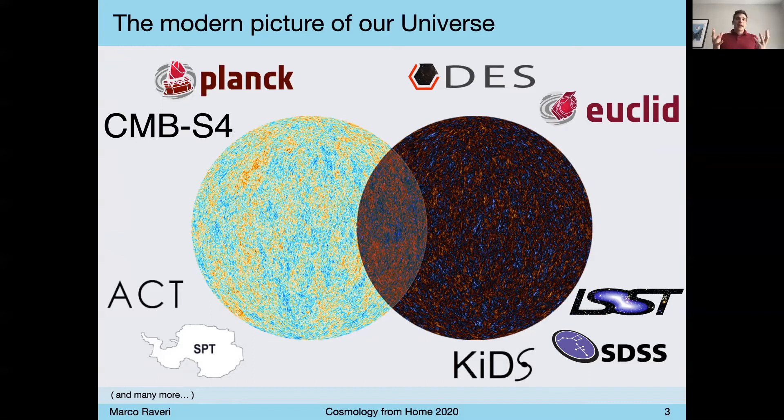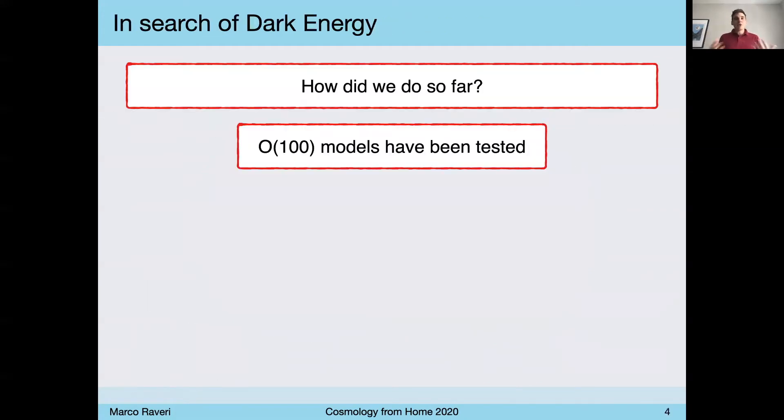And this aim at detecting properties of these two dark components to their indirect effect on the fluctuations in temperature of the cosmic microwave background, and in the clustering pattern of galaxies. And since some of these experiments already took data, and we are expecting the next generation, I think it makes sense to ask ourselves how did we do so far in the search for the physical nature of dark energy and gravity.